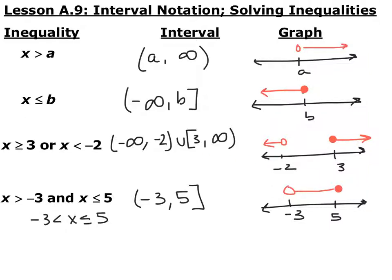For AND: x is greater than negative 3 and less than or equal to 5, which is the same as writing negative 3 < x ≤ 5. Always make sure when writing compound inequalities that they face the same direction and are true — 5 is greater than negative 3, so this is a true statement. The interval notation has a parenthesis on negative 3 and a bracket on 5. On the graph, open circle on negative 3, closed circle on positive 5, and shade the part in between.